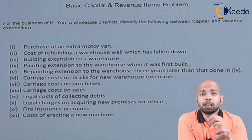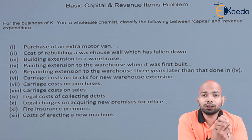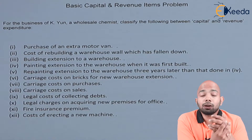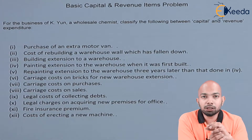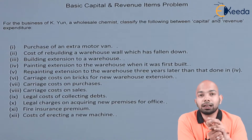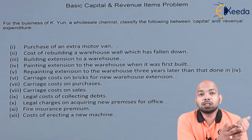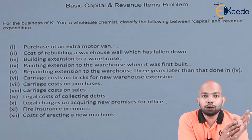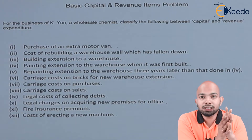It might be income, it might be expense — anything. Let's go ahead and figure out that illustration so that we can have more clarity on the bifurcation. This is a basic problem so you won't have much difficulty, and once you understand this, the advanced concepts will be a little easier to understand.